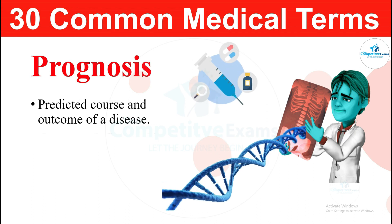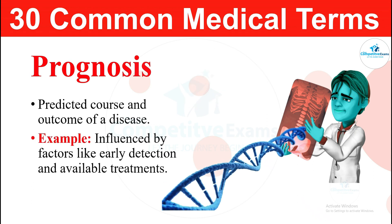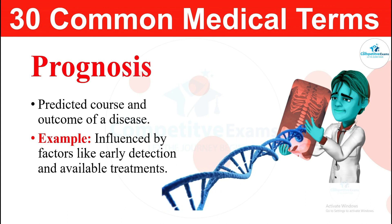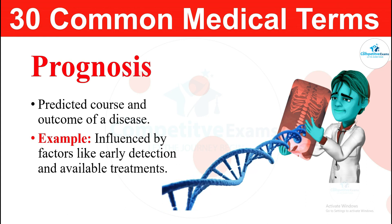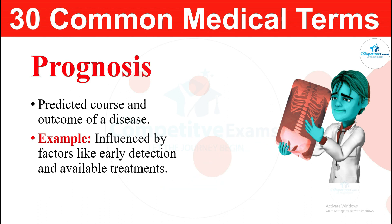The next term: prognosis. Prognosis is the predicted course and outcome of a disease. It is influenced by factors like early detection and availability of treatments. That is known as prognosis.